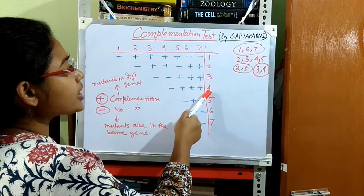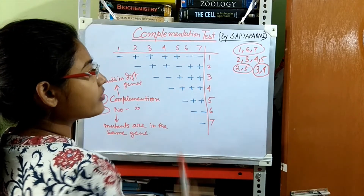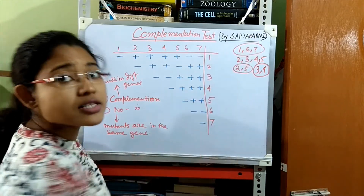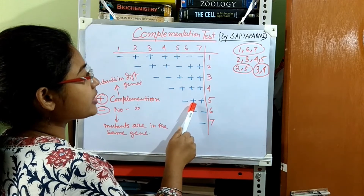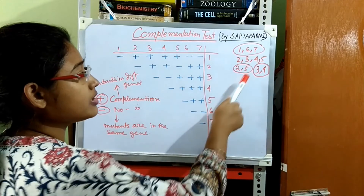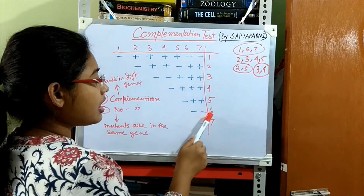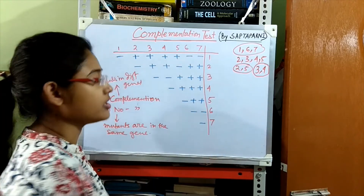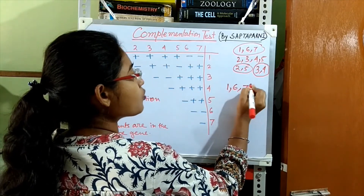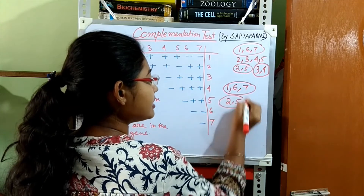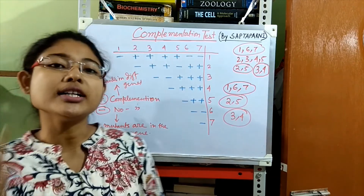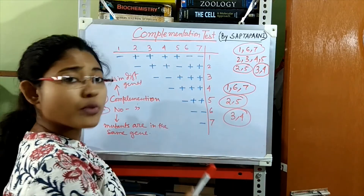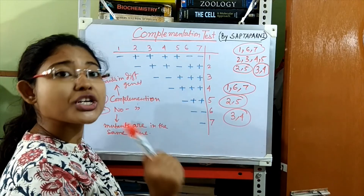From the data, mutation 3 is non-complementary with 4, so 3 and 4 are in the same gene. Mutation 4 is complementary with 5, 6, and 7, confirming 4 is not in the gene of 5, 6, or 7. Mutation 5 is complementary with 6 and 7, so 5 is in a different gene from 6 and 7. Mutations 6 and 7 are non-complementary, meaning they are in the same gene. Therefore, there are 3 complementation groups: Group 1 contains mutations 1, 6, and 7; Group 2 contains mutations 2 and 5; and Group 3 contains mutations 3 and 4.